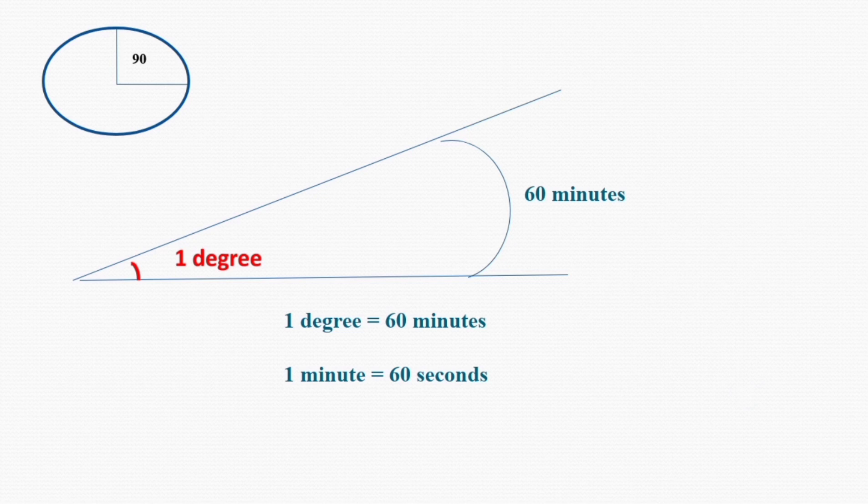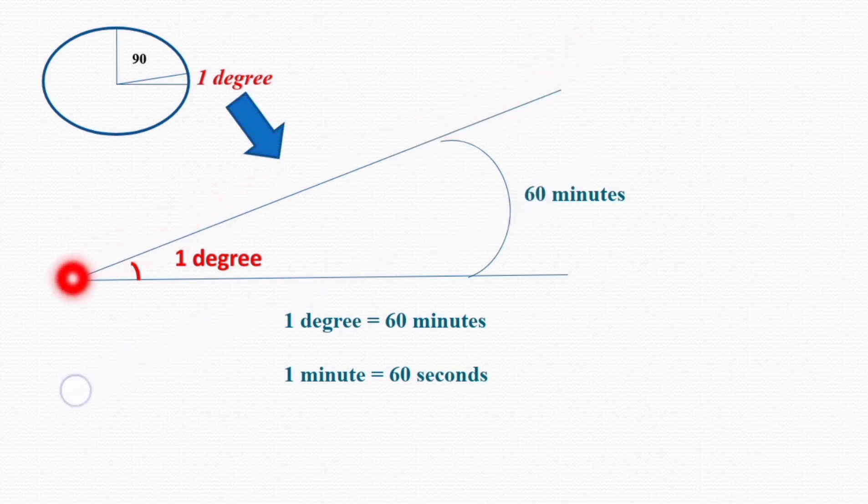Now here I will try to explain what is a second of the arc. This whole circle, as we all know, is 360 degrees. So suppose this is 1 degree. Here I have shown 1 degree out of these 360 degrees.